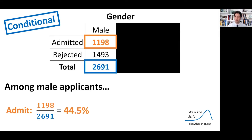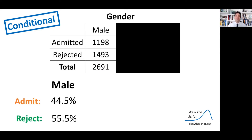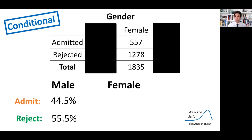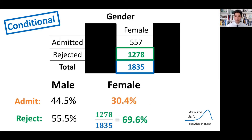The same can be done for the proportion rejected: of 2,691 male students, roughly 1,493 were rejected — that's 55.5%. So we have the conditional distribution among male applicants: the proportion admitted and rejected, conditional on being male. Now conditional on being female: the female total is 1,835. With 557 admitted out of that total, 30.4% of female students were admitted and 69.6% of female students were rejected.